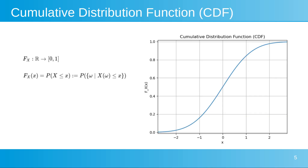The cumulative distribution function (CDF) represents the probability that a random variable X takes on a value less than or equal to a specific value x. The graph of the CDF is typically non-decreasing, reflecting that as x increases, the cumulative probability also increases. For continuous random variables, the CDF is obtained by integrating the probability density function (PDF), resulting in a smooth curve from 0 to 1. For discrete random variables, the CDF appears as a step function, where each step represents cumulative probability up to a given value. The CDF is a crucial tool for understanding and analyzing the distribution of data.